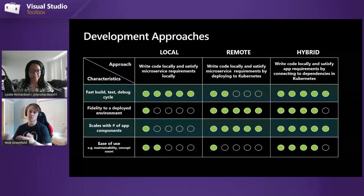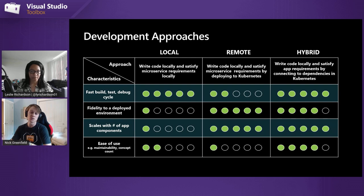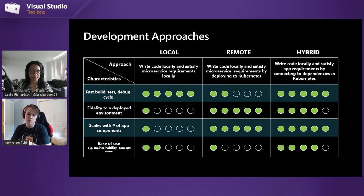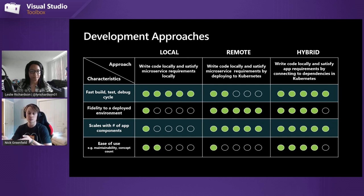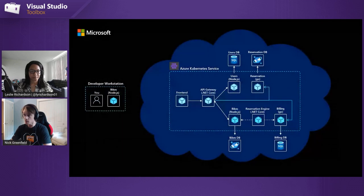The last approach is the hybrid approach — this is where Bridge to Kubernetes falls — and it's the best of both worlds. It allows you to write your code on your development workstation but connect to external dependencies running in a remote environment, like an Azure Kubernetes cluster, to leverage the whole end-to-end workflow. The only thing running on your developer workstation is the code you're actually working on, and we're seeing this resonate with customers quite well.